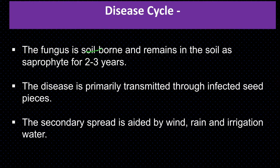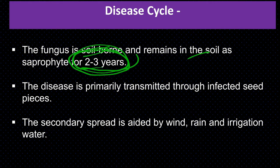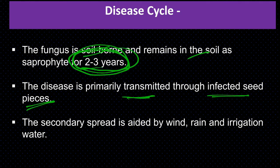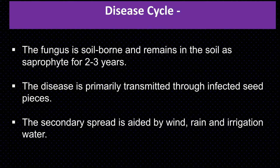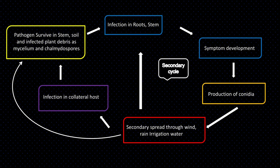Disease cycle: the fungus is soil-borne and can remain in the soil as a saprophyte for 2 to 3 years. The disease is primarily transmitted through infected seed pieces. If infected stems are used as seed, the disease is transmitted from one place to another. Secondary spread is aided by winds, rain, and irrigation water.